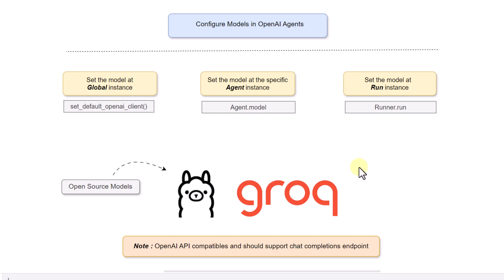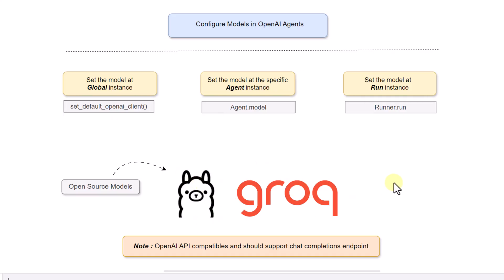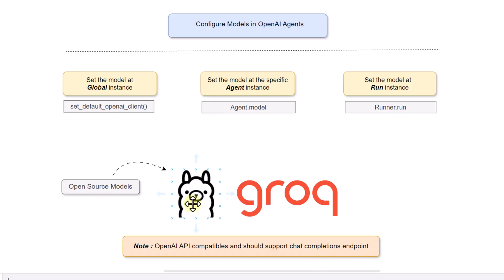In this video, we are going to cover how to integrate open source models with the OpenAI Agent SDK. There are different ways to configure any kind of model in OpenAI agents. We are going to use open source models offered by Ollama and Groq. The only criteria is that the open source model library should be compatible with the OpenAI API and should have support for the chat completion endpoint.